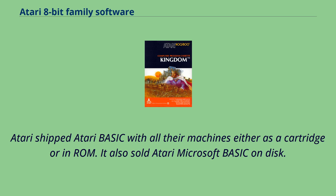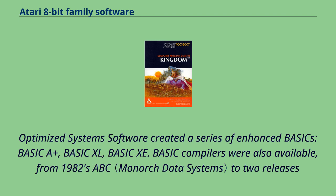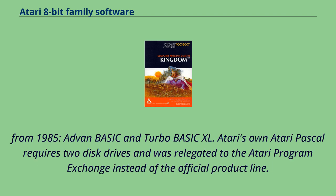Atari shipped Atari BASIC with all their machines, either as a cartridge or in ROM. It also sold Atari Microsoft BASIC on disk. Optimized System Software created a series of enhanced BASICs: BASIC A+, BASIC XL, and BASIC XE. BASIC compilers were also available, from 1982's ABC to two releases from 1985: ADVAN BASIC and Turbo BASIC XL.